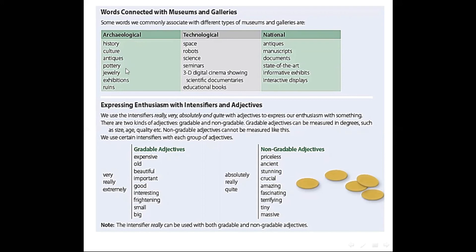What about technological: space, reports, science, seminars, 3D digital cinema showing, scientific documentaries, and educational books. And the words concerning with national are also antiques, manuscripts, documents, state-of-the-art, informative exhibitions, and interactive displays.